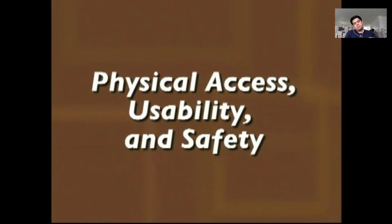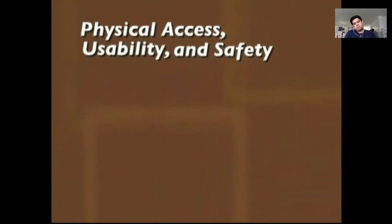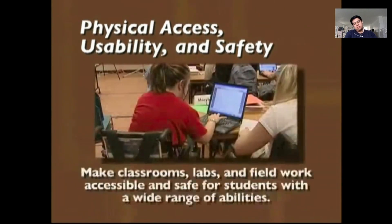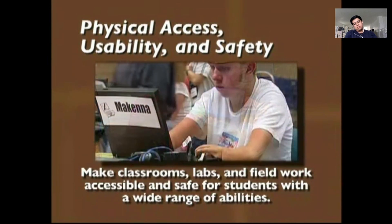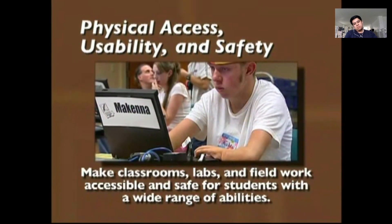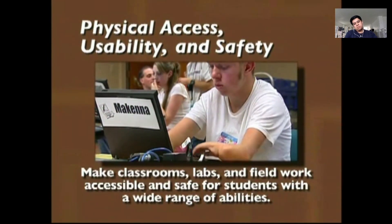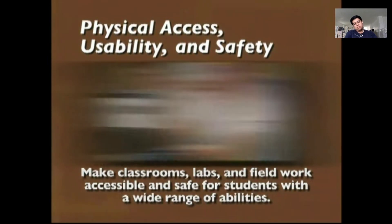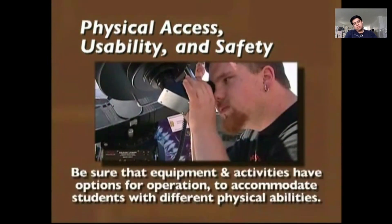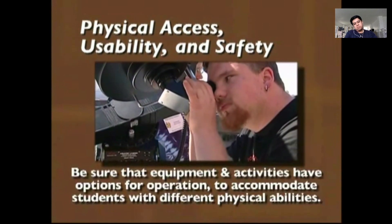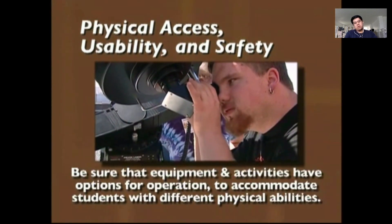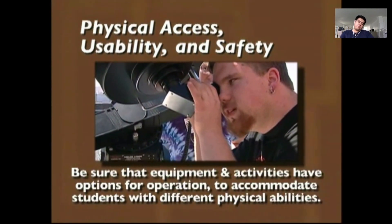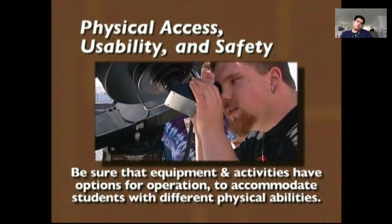Regarding physical access, usability, and safety: make classrooms, labs, and field work accessible and safe for students with a wide range of abilities. Ensure that equipment and activities have options for operation to accommodate students with different physical abilities, such as a student peering into a telescope.